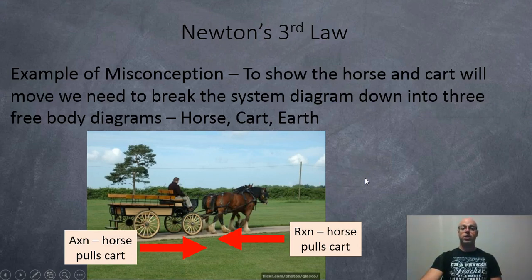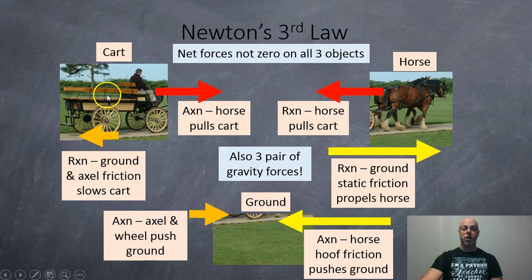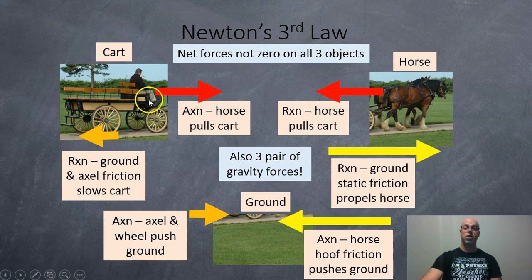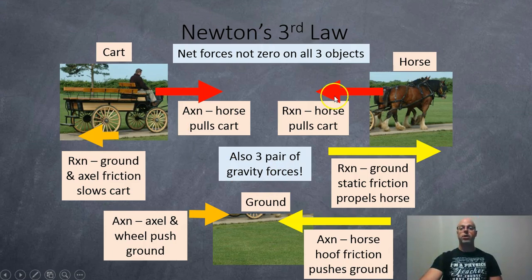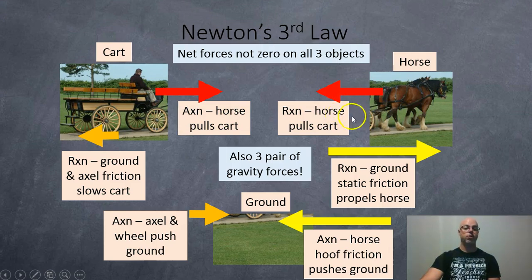To figure this out you need a system diagram — a free body diagram for every major object. We have the cart, the horse, and the ground. We'll ignore gravity pairs for simplicity. The action-reaction pair in red: the horse pulls on the cart (action) and the cart pulls back on the horse (reaction). Now, to understand motion, we look at the other forces: the horse's hooves push on the ground (action), the ground pushes back via static friction (reaction). As long as the horse's friction force is greater than the cart pulling back, the horse will accelerate.